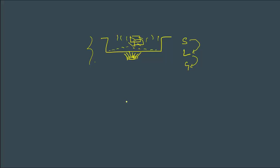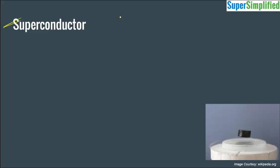In order to move further, let me introduce you to two supermaterials: superconductor and superfluid. A superconductor is a material which at a certain extremely low temperature — known as critical temperature, we will call it TC — below this temperature, that material will start exhibiting zero electrical resistance.